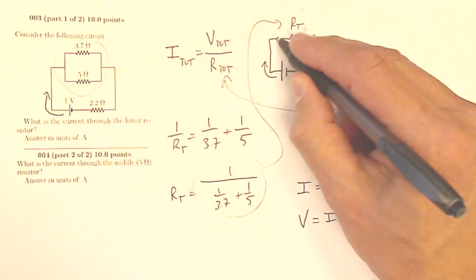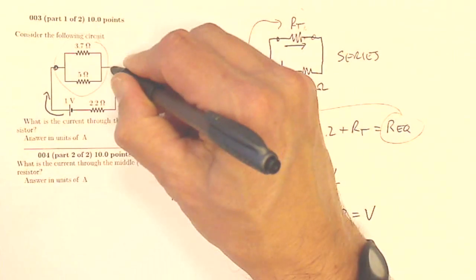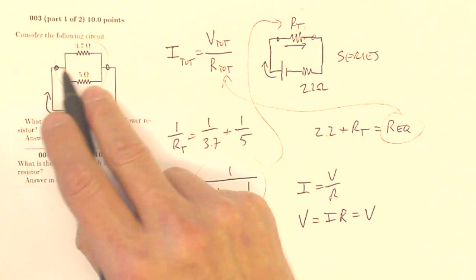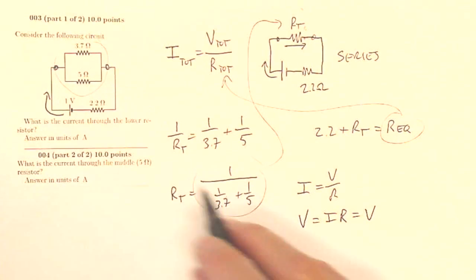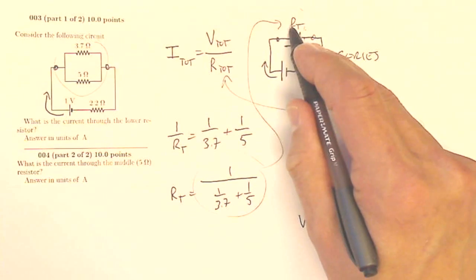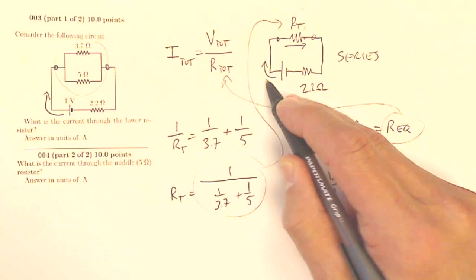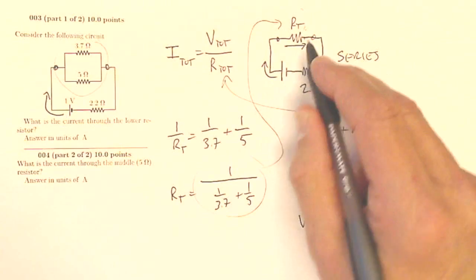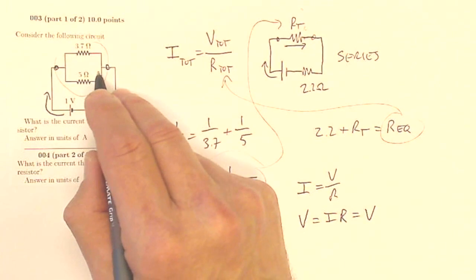Once I know the voltage there, that is the same as the voltage here, because that's the resistor that I replaced these ones with. So if you know this voltage here from V equals IR, this R and this I leaving the battery, then you know the voltage here, so you know the voltage here.